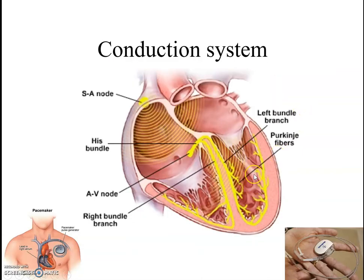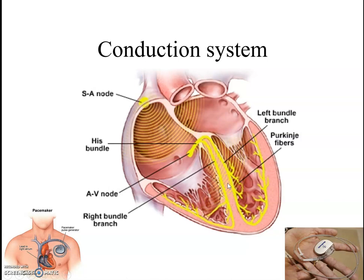The Bundle of His divides into a right leg and left leg, and ramifies all over the ventricular wall through various branches. These branches are the Purkinje fibers. When the AV node is stimulated, the impulse ramifies through the entire wall. Then the ventricle will contract. When it relaxes, the stimulation stops and the wall relaxes.